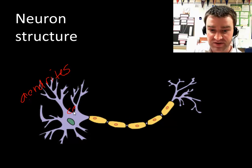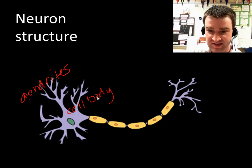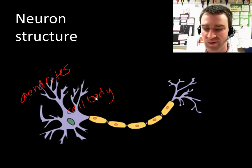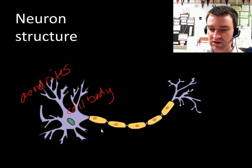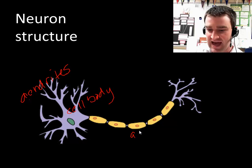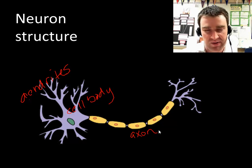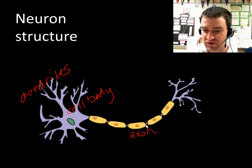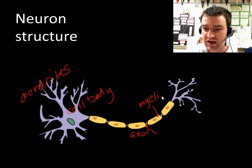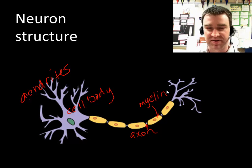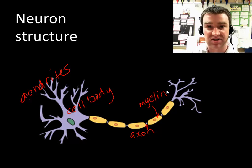We've got the cell body. Any neuron has to have a region where the nucleus is, that makes all the proteins and has all the organelles in it. And then there's going to be kind of this long, slender region called the axon that's going to send the electrical signal it generates onto the next neuron. The axon looks wrapped with this yellow substance. That yellow substance also has a name — it's called myelin.